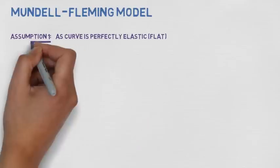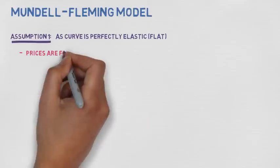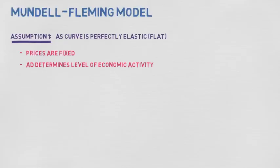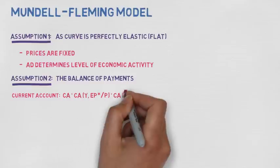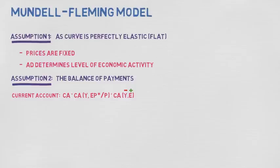So let's look at one of the main models in exchange rate determination: the Mundell-Fleming model. Our first assumption is that the AS curve is perfectly elastic, meaning that prices are fixed and that aggregate demand is used to determine the level of economic activity. Our second assumption is to do with the balance of payments: PPP doesn't hold even in the long run, and the current account surplus depends positively on the real exchange rate E and negatively on real income Y. Note that given fixed prices, real and nominal exchange rates are identical. We also assume the Marshall-Lerner condition holds.